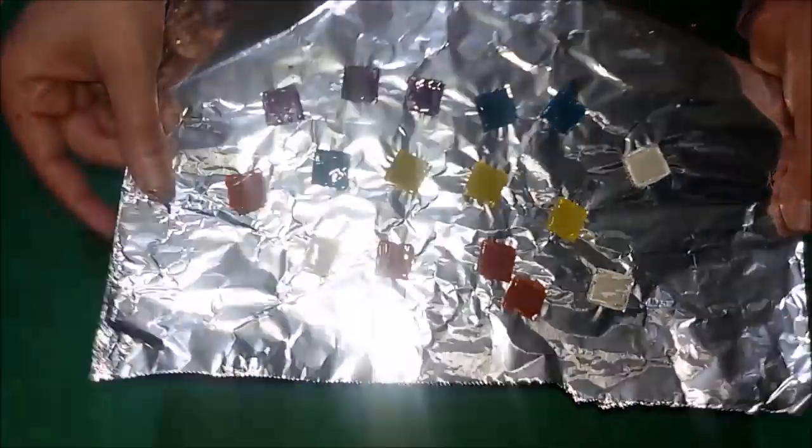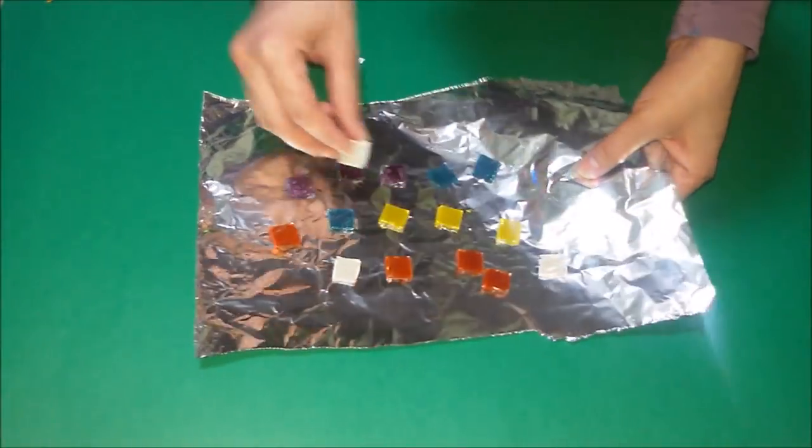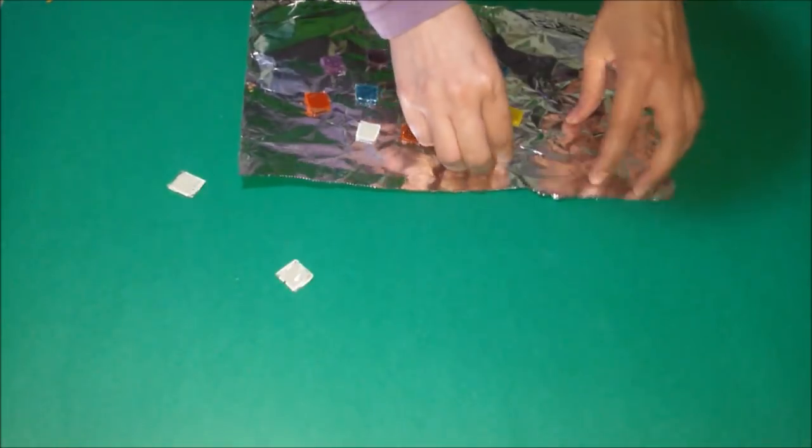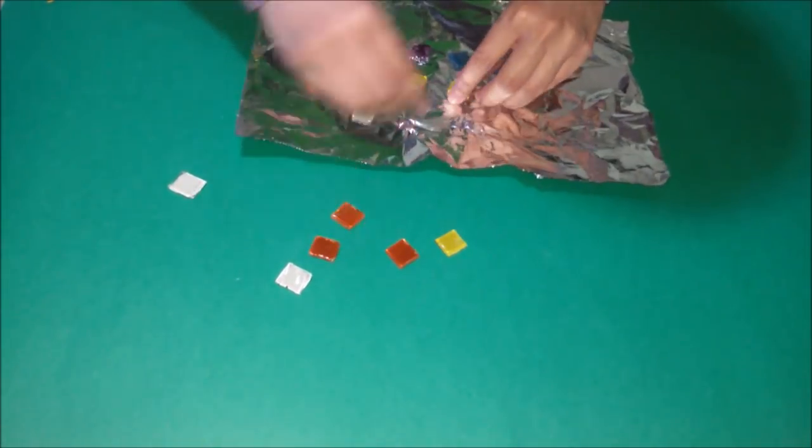Okay, so I take my mosaics out of the oven. This is how they look like. They are going to be stuck on this foil, so we just remove them.